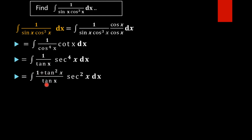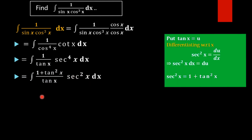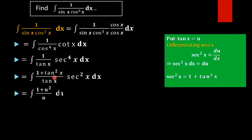So here we have tan x and the derivative of tan x is sec²x dx. Now we substitute tan x = u, then sec²x = du/dx, and sec²x dx = du. By using this substitution, we rewrite the function: 1 + tan²x becomes 1 + u², and sec²x dx becomes du.